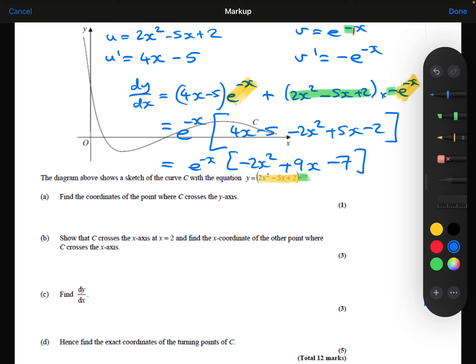And then part D: Hence, find the exact coordinates of the turning points. I know that is when my gradient is equal to 0. Again, similar to what I did before, I know that I can divide both sides by the exponential because I know that can't equal 0. So the only answers I will get is where the quadratic is equal to 0.